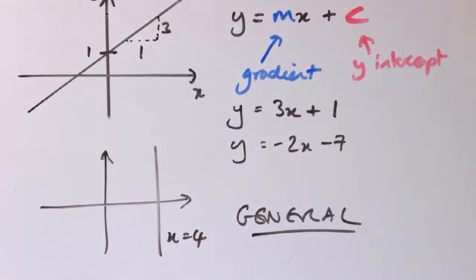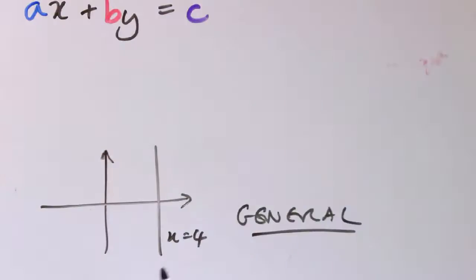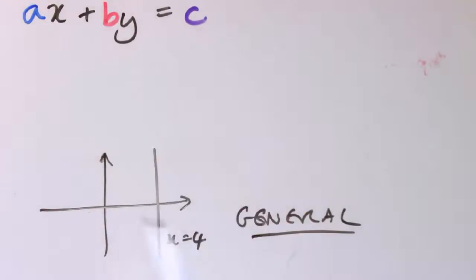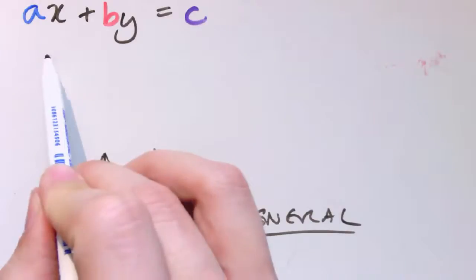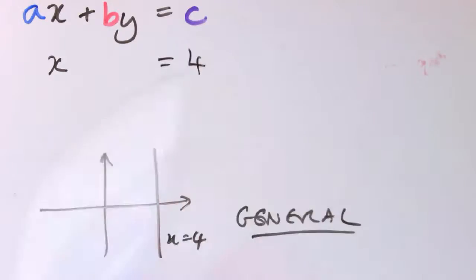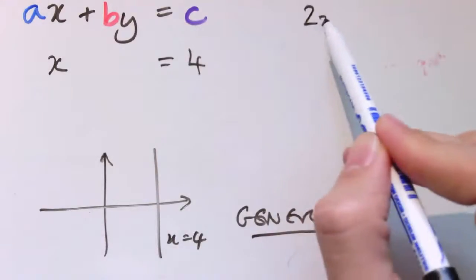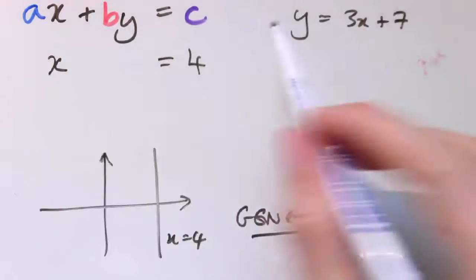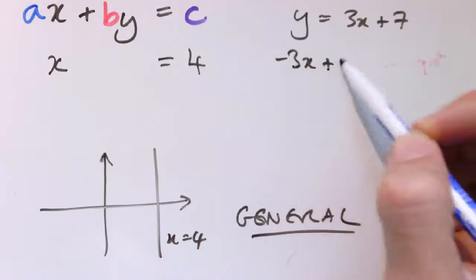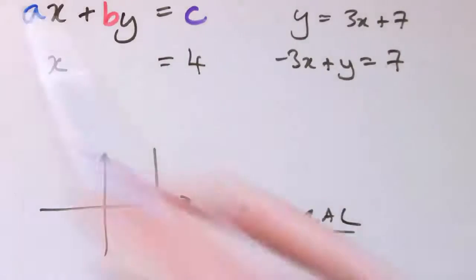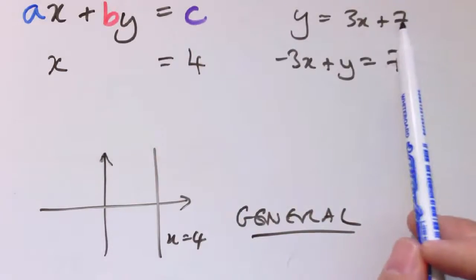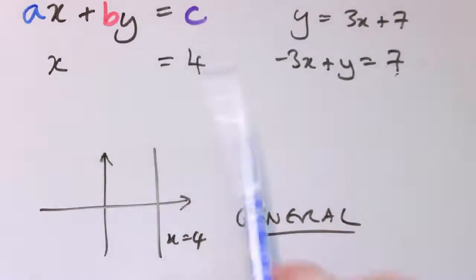So the first truly general form I'll show you is ax plus by equals c. By choosing different values of a, b, and c, this always gives a straight line, and any straight line can be put into this form. For example, x equals 4 can be written with a equals 1, b equals 0, and c equals 4. And if I took y equals 3x plus 7 and rearranged, I'd get minus 3x plus y equals 7, so a is minus 3, b is 1, and c is 7.